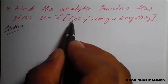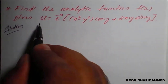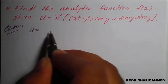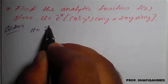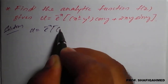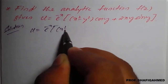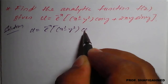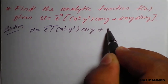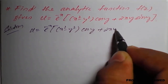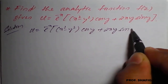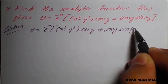So the given function: they have given the real part, that is u = e^(−x) · [(x² − y²)cos y + 2xy sin y].